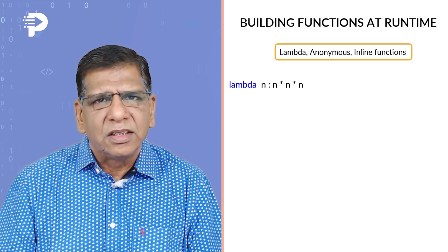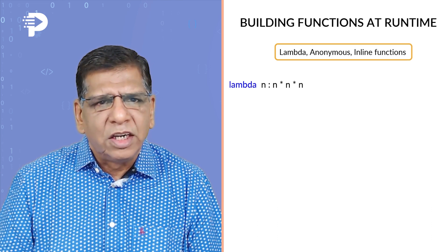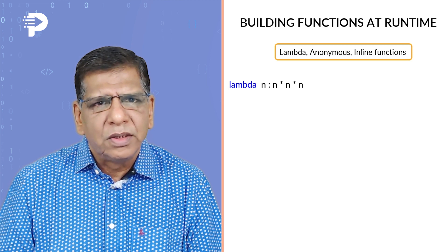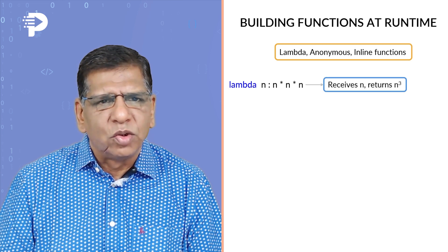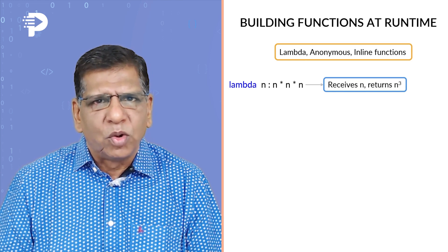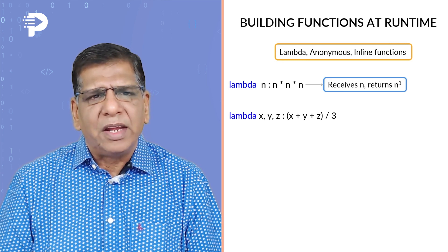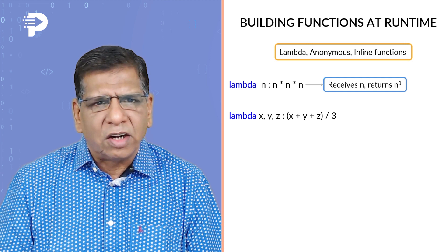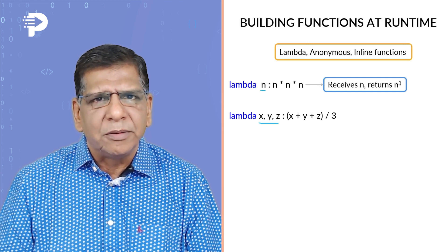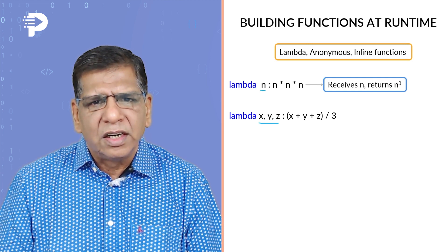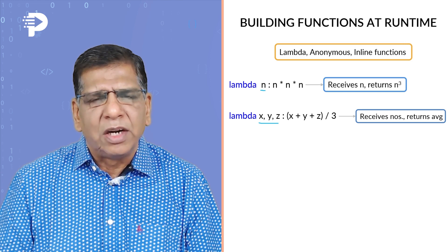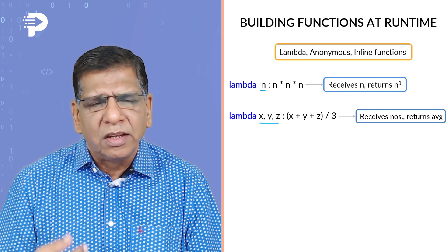Here is the first lambda function: it receives argument n and returns n cubed — so it receives n and returns n*n*n. For a second example, lambda x, y, z shows that a lambda function can receive any number of arguments. In this case it receives three and returns the average of the three numbers. You can receive multiple arguments but ultimately you return only one value back.